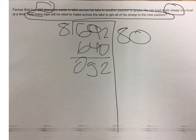And 8 times 5 equals 40. 2 minus 0 equals 2. 5 minus 4 equals 1.